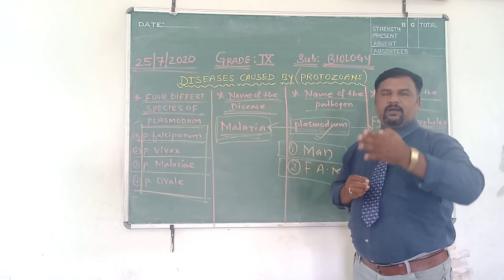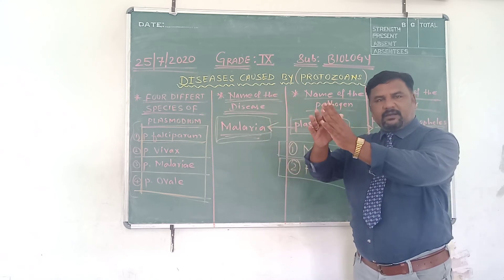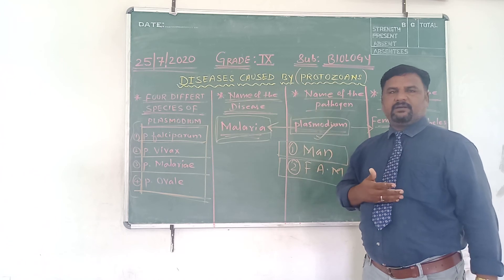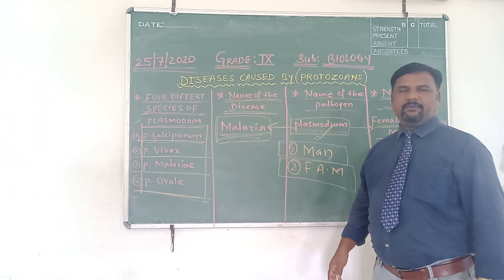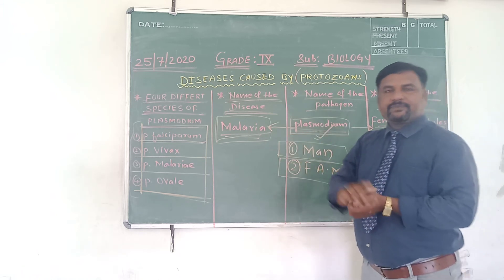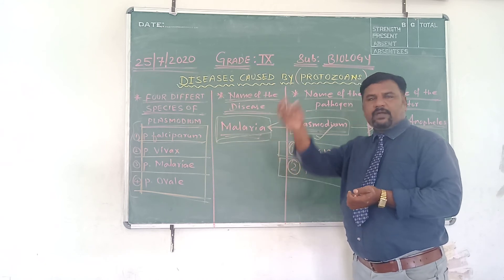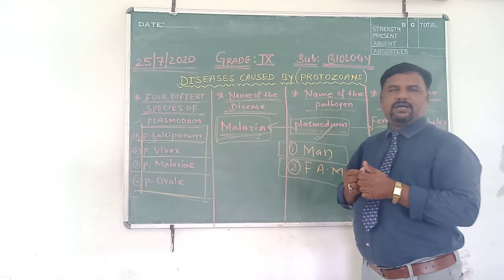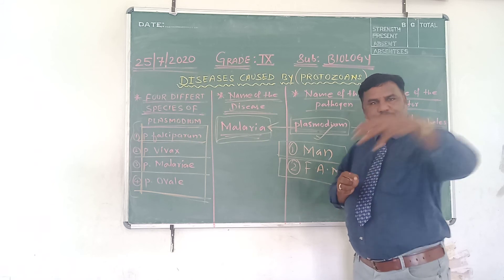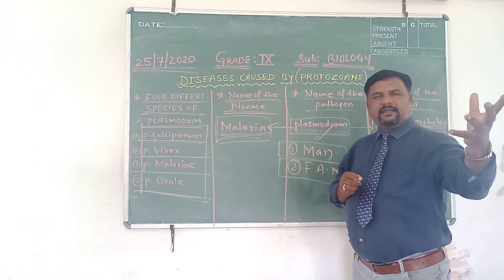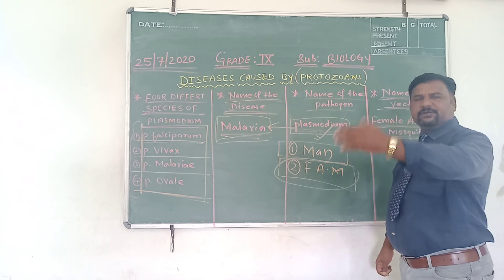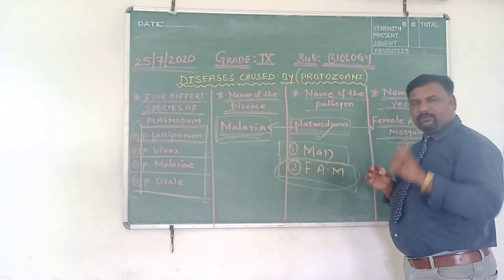In the liver, the Plasmodium multiplies — they are called merozoites and sporozoites — increasing in number. Once they multiply, they come back from the liver to the blood. When another mosquito bites that person, the Plasmodium living in his blood enters back into the salivary gland of the mosquito. Inside the mosquito, the Plasmodium completes its second life cycle, and this cycle continues — this is how malaria spreads.